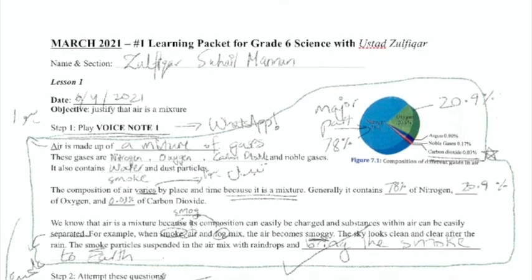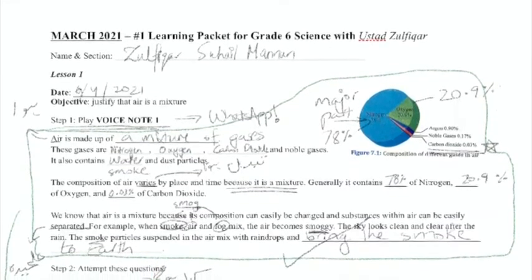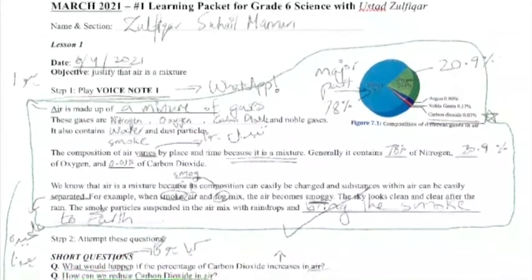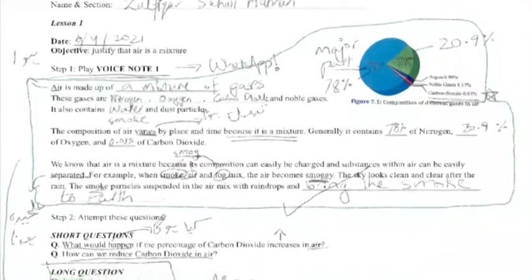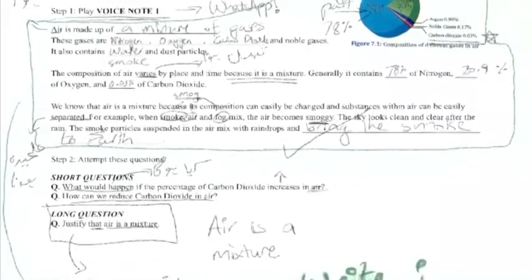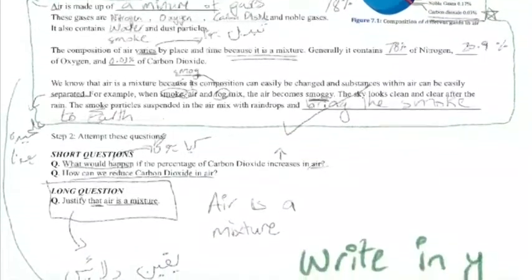The last question is a long question: Justify that air is a mixture. Justify means to convince that air is a mixture. And how will we convince this? All the text we studied today, in which I did the fill in the blanks, that is the answer. So you need to write this complete answer below this question.